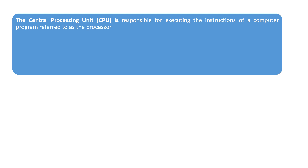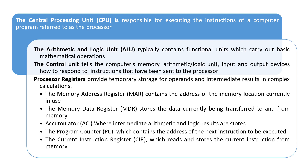The main component is the central processing unit, which is responsible for executing the instructions of a computer program — referred to as a processor. It contains three major parts: the ALU (arithmetic logic unit), which carries out basic mathematical operations; the control unit, which tells the computer's memory, ALU, and input and output devices how to respond to instructions sent to the processor; and the processor registers, which are temporary storage for operands and intermediate results in complex calculations.